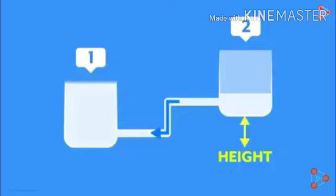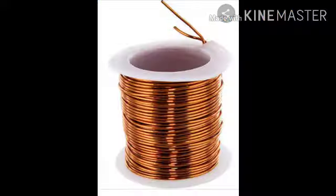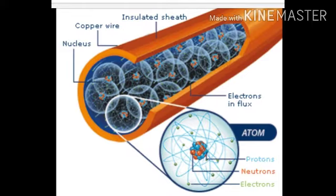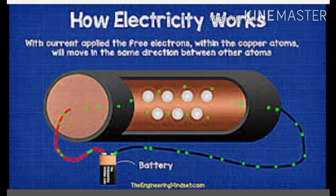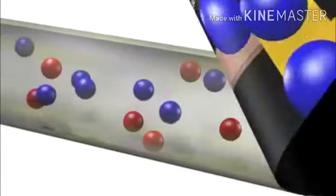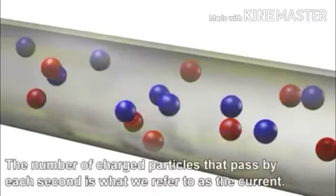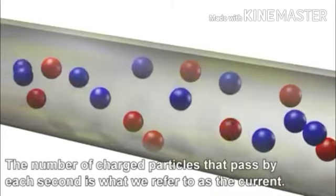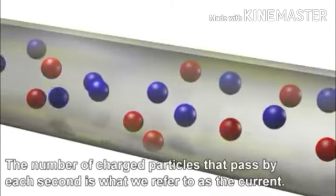Similarly, the flow of current is also from higher level to lower level. But unlike water, current is not a liquid — so what is going to flow? Wires are made up of atoms, and atoms are made up of electrons, protons, and neutrons. In metals, the electrons flow. Due to the movement of electrons, there is flow of electric current.